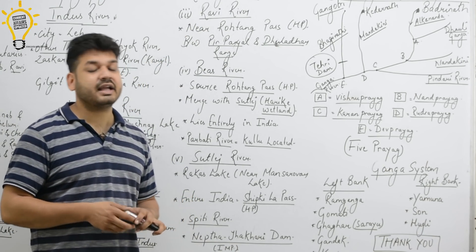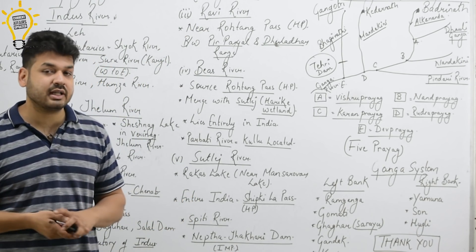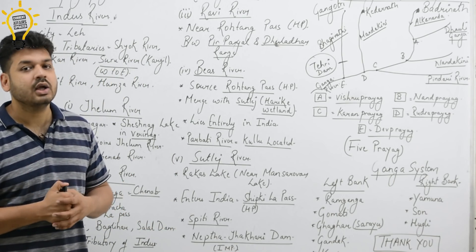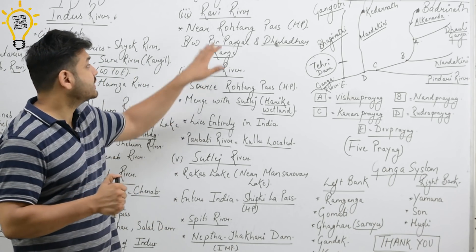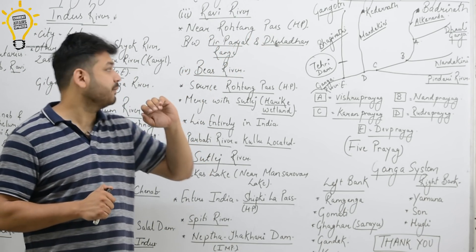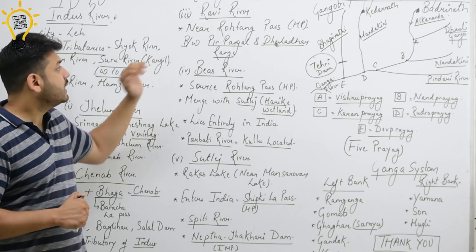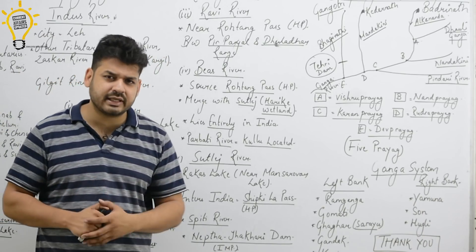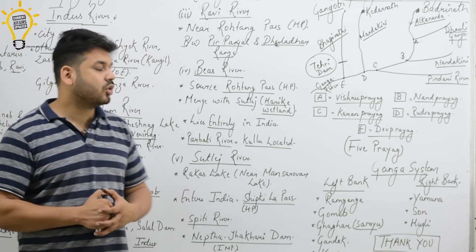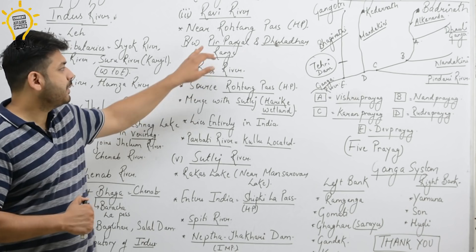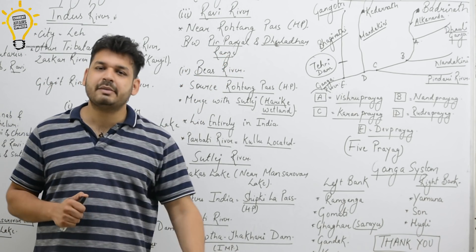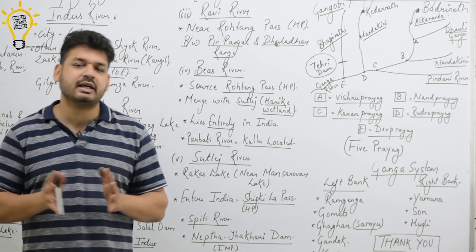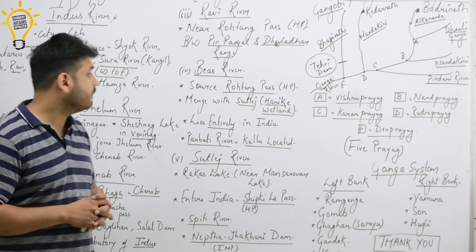The next tributary is Ravi River, which originates from Himachal Pradesh, specifically from Rohtang Pass. Ravi River flows between two important ranges: Pir Panjal range and Dhaula Dhar range.